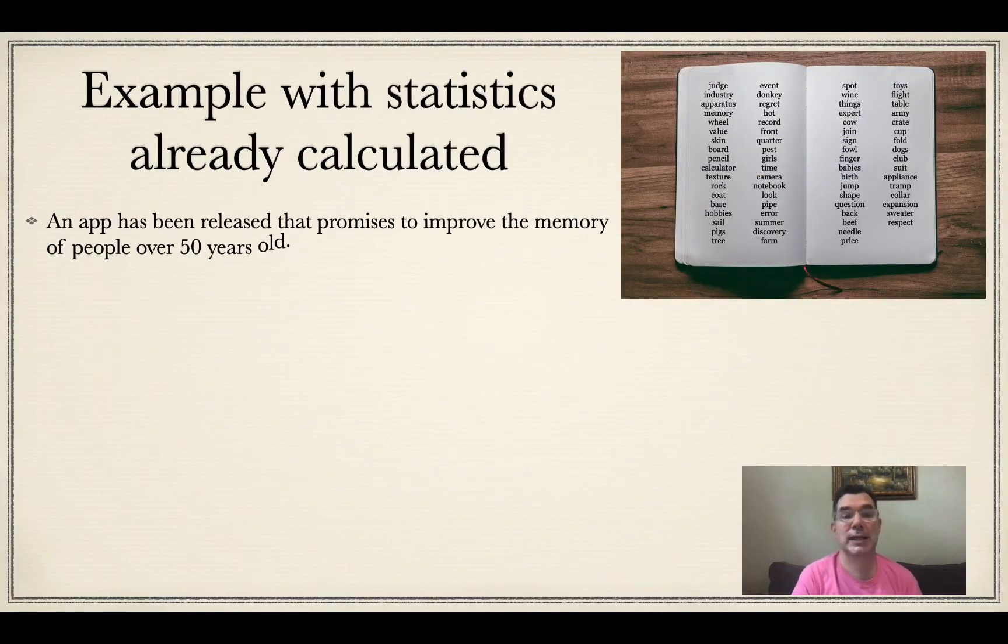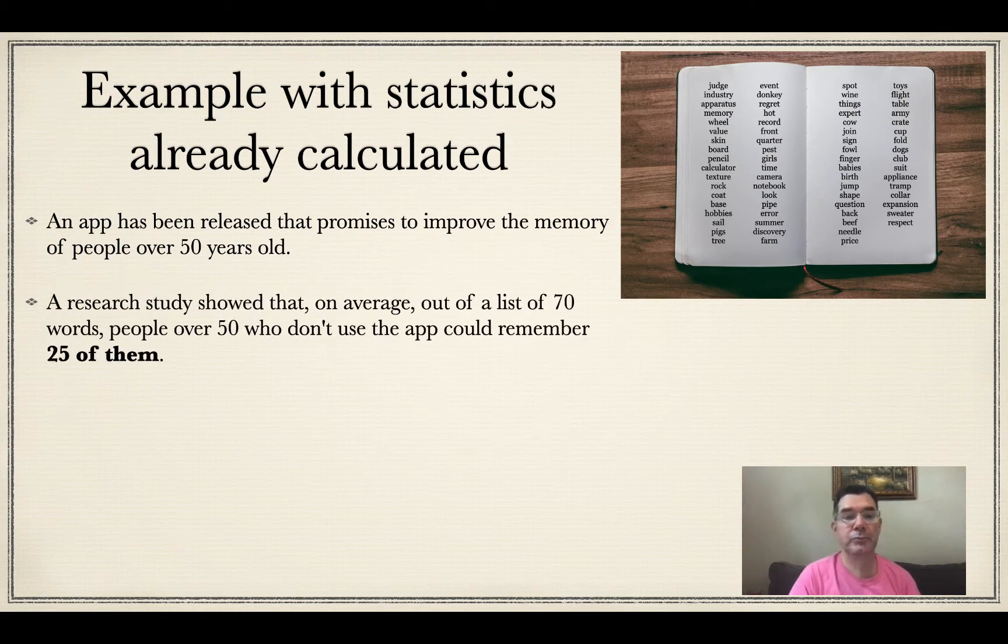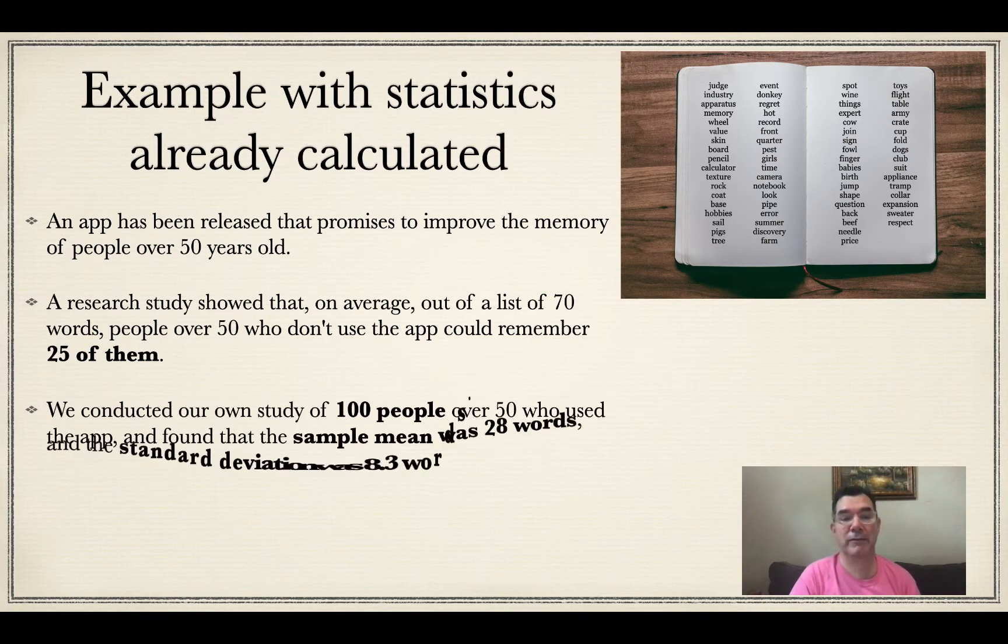Let's get started with an example where the statistics have already been calculated. I already know my sample mean, my sample standard deviation, and all of that. An app has been released that promises to improve the memory of people over 50 years old. A research study showed that on average, out of a list of 70 words, people over 50 who don't use the app could remember 25 of them.